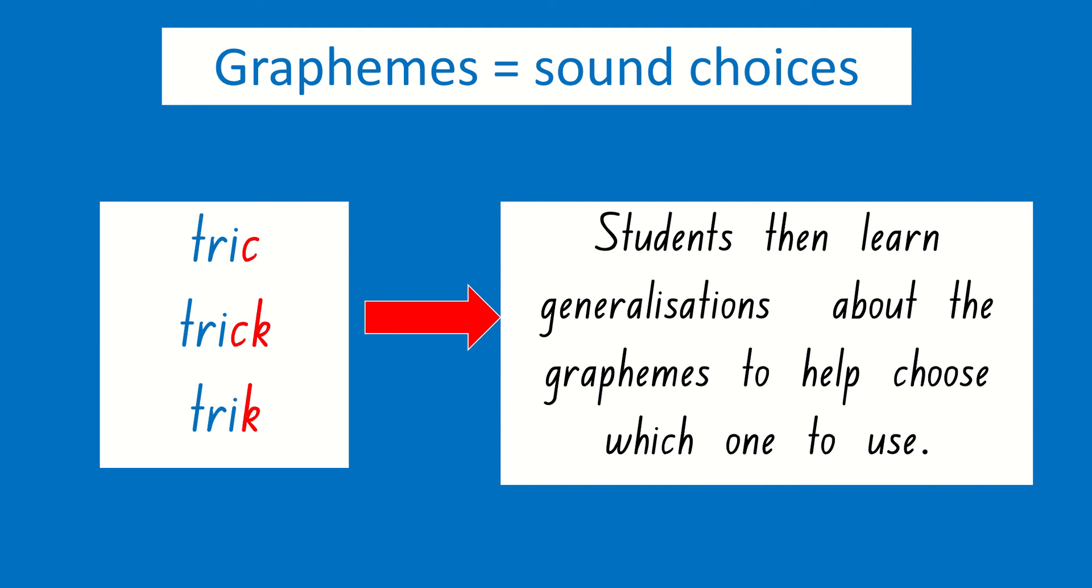Trick, trick, trick. But only one is spelt correctly. And as students progress through their understanding of different graphemes, they're going to then learn generalisations about these graphemes to help them choose which one to use. And so some of that is looking at it to see which one looks right. But there are also generalisations to help them know that the ck grapheme or digraph comes after a short vowel sound, so we use it in trick.